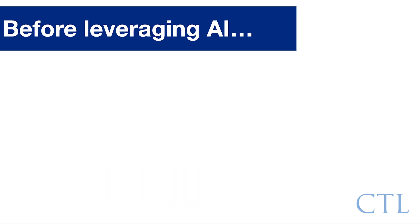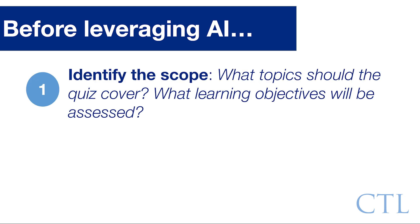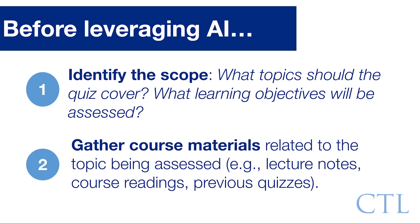Before leveraging ChatGPT to generate quiz questions, it is important to identify the scope of the quiz and the overall learning objectives. What topics should the quiz cover? What learning objectives will be assessed? This will help in developing an AI prompt that is specific to the learning needs. Gather course materials related to the topic being assessed that you would be comfortable inputting into ChatGPT. This might include lecture notes, specific course readings, or previous quizzes and exams. Providing this specific content or examples to the AI will help yield better quiz question outputs.